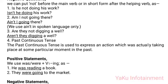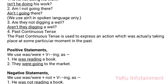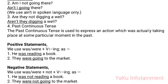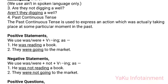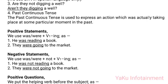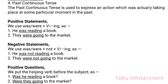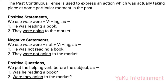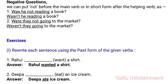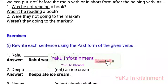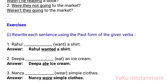Past Continuous Tense is used to express an action which was actually taking place at some particular moment in the past. Positive statements use was/were + V-ing: 'He was reading a book,' 'They were going to the market.' Negative statements use was/were + not + V-ing: 'He was not reading a book,' 'They were not going to the market.' Positive questions — put the helping verb before the subject: 'Was he reading a book?' 'Were they going to the market?' Negative questions: 'Was he not reading a book?' / 'Wasn't he reading a book?' 'Were they not going to the market?' / 'Weren't they going to the market?'